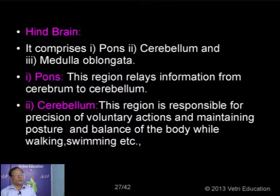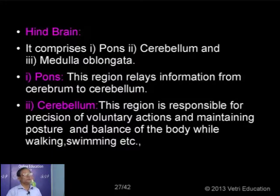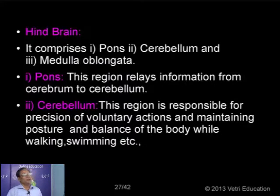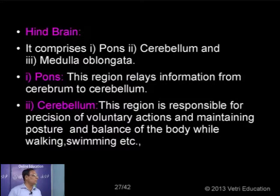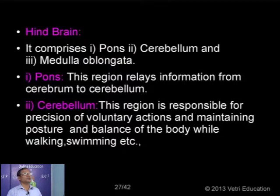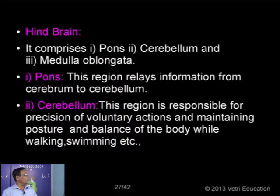Now the last part — the hindbrain, called the rhombencephalon, again divided into metencephalon and myelencephalon. The hindbrain is the most important part of the brain because if anything happens to other parts of the brain you feel unconscious, but if something happens to the hindbrain, the person dies. Because the hindbrain controls two important vital activities — namely the heartbeat and also the breathing. These are the two vital activities for survival. The hindbrain is formed of three components: pons, cerebellum, and medulla oblongata.